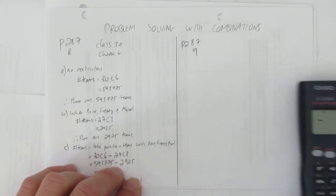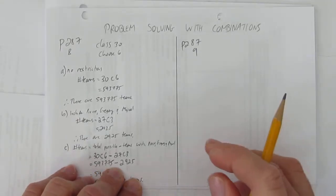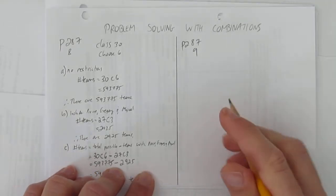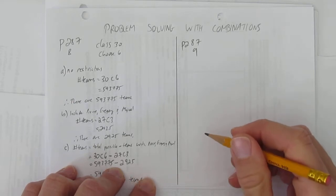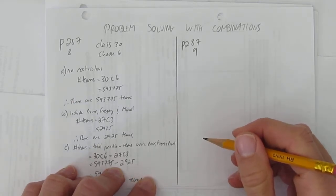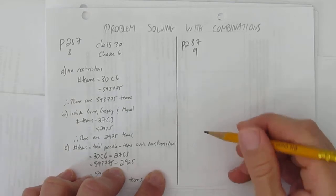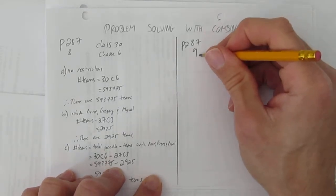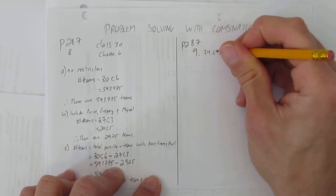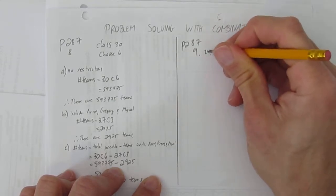Question nine on the same page talks about the card game Euchre that uses only the nines, tens, jacks, queens, kings, and aces from a standard deck of cards. And it's going to ask about five card hands. So nines, tens, jacks, queen, king, aces. That's 24 cards that we're looking at.